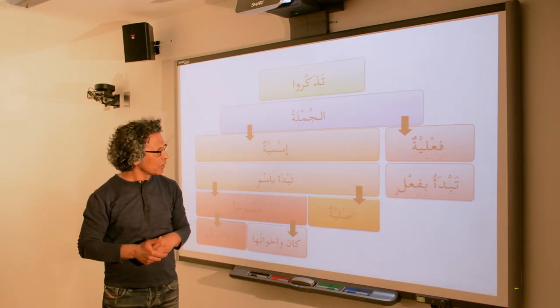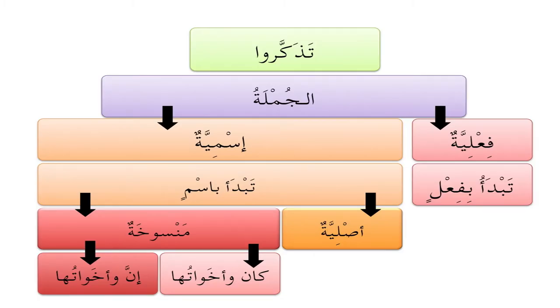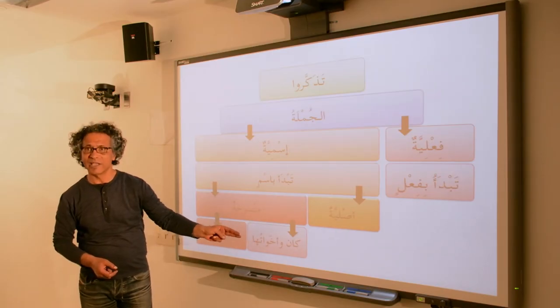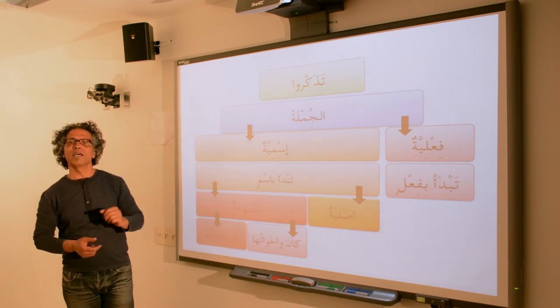الجملة الإسمية is of two types: الأصلية, the original, والمنسوخة, literally 'copied on the original.' المنسوخة is of two types: introduced by كان وأخواتها (كان and its sisters) and إنّ وأخواتها (إنّ and its sisters). These two types will be covered later.